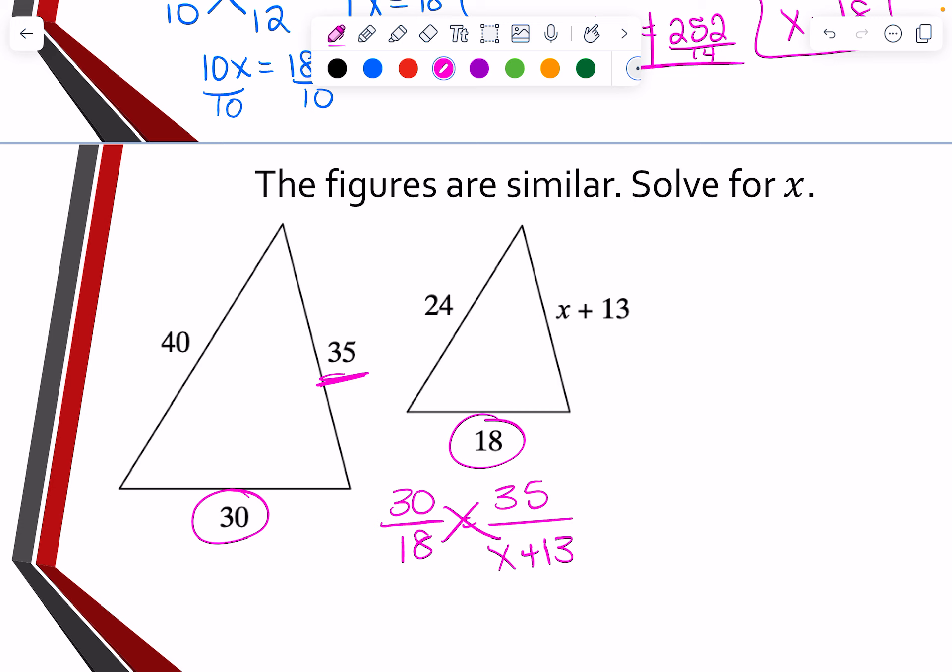So I'm going to start off, I'm going to go 18 times 35. And that gives us 630. Now I'm going to multiply 30 times X, but remember I also have that plus 13. So I have to take and multiply 30 times 13, which is 390. At that now, I'm going to come back up here just to have some more room. So I have 630 equals 30X plus 390.